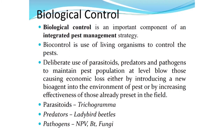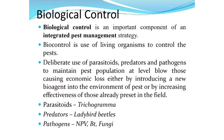Biological control uses living organisms and is an important component of IPM strategy. It uses parasitoids, predators, and pathogens to maintain pest populations at levels that do not cause economic loss — either by introducing a new bio-agent to an environment or by increasing the effectiveness of those already present. Parasitoids live in or on other organisms; for example, Trichogramma is an egg parasitoid attacking pest eggs, while larval and pupal parasitoids attack larvae and pupae respectively. Predators are bigger organisms needing large numbers of insect pests to complete their life cycles.